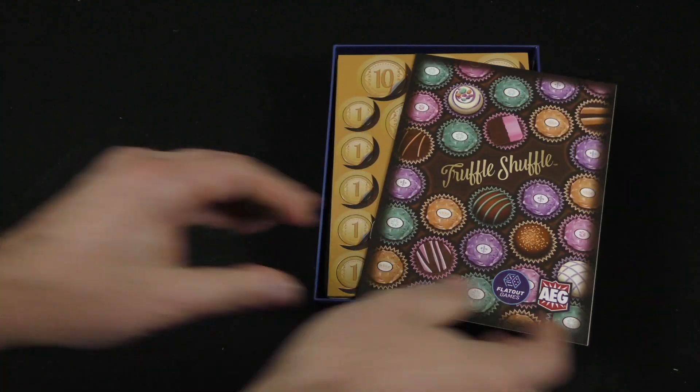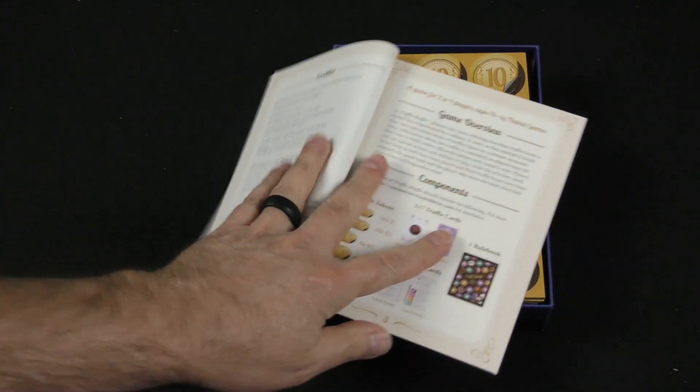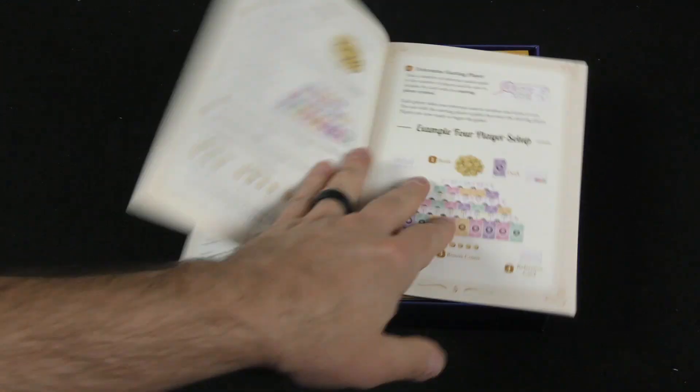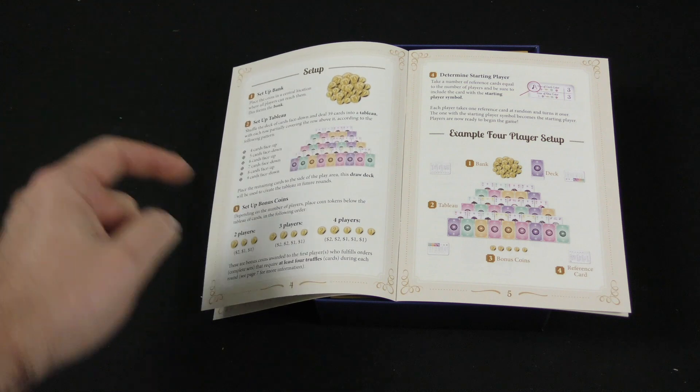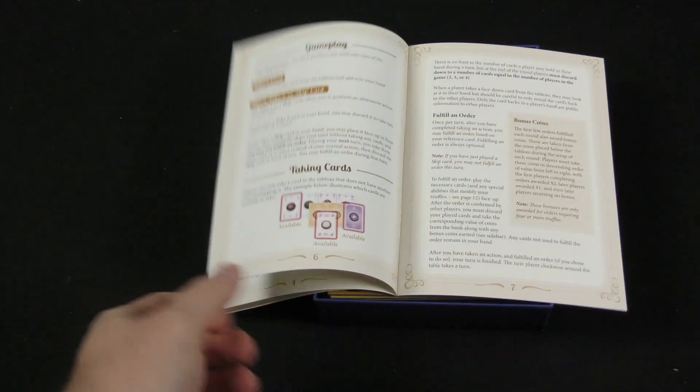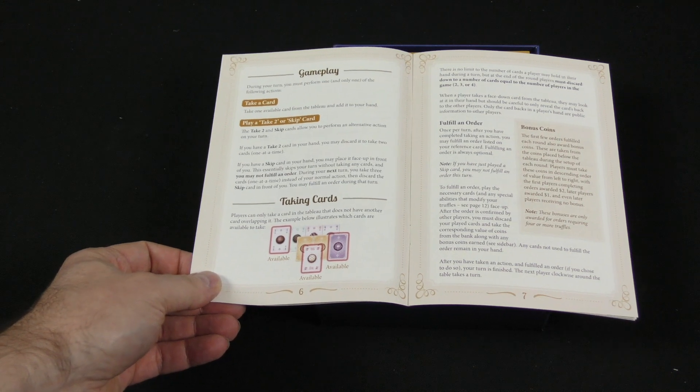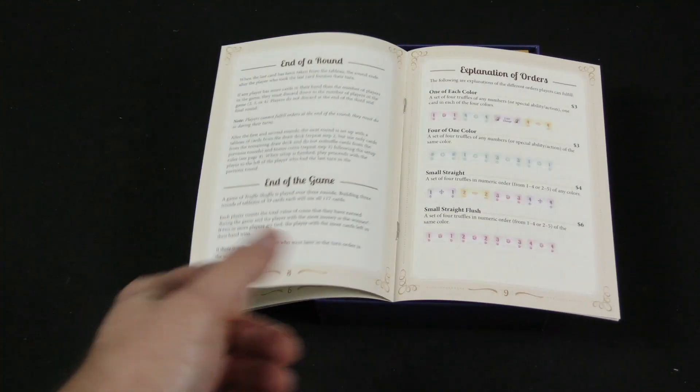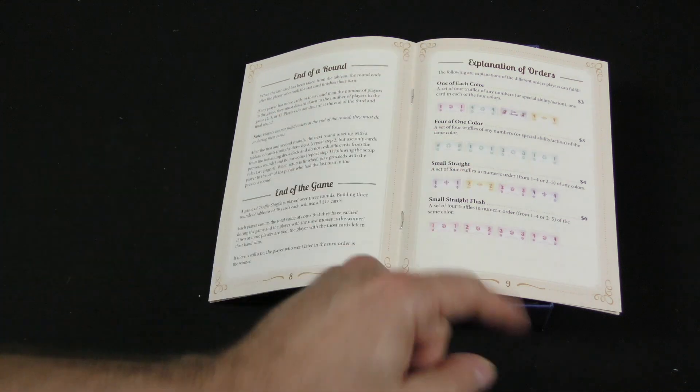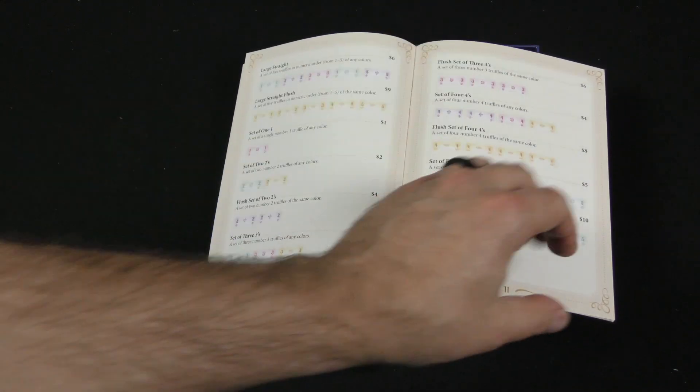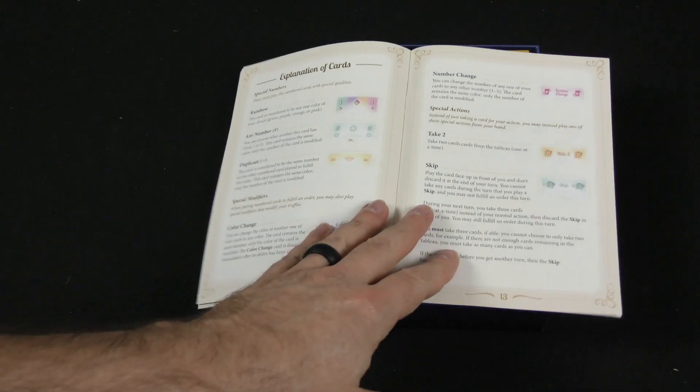There we go. We've got our game overview and components here. Setup. Gameplay. Take a card, play a take two or a skip card. Fulfilling orders. Explanation of orders. So you've got a lot of different sets it looks like.